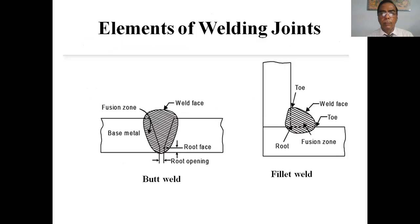Elements of welding joints include the fusion zone, weld face, root face, root opening, and the base metal. In a butt weld, the elements are fusion zone, weld face, and on the right side is the fillet weld with root, fusion zone, weld face — showing the flat and vertical surfaces where tau is the throat dimension.